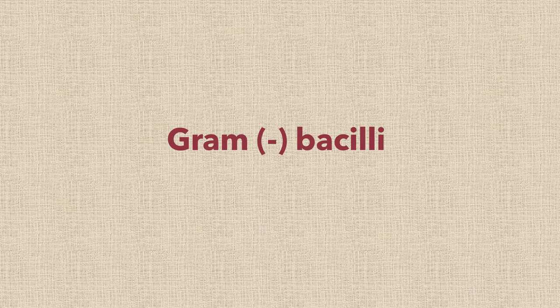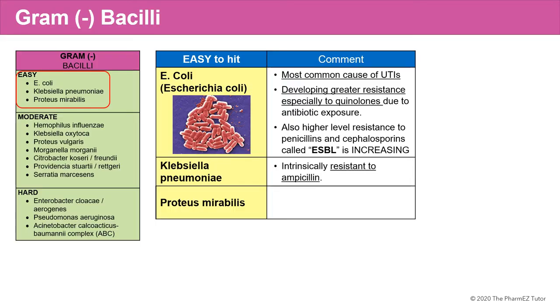First, we'll talk about some of the characteristics of the gram-negative bacilli, and then we'll talk about the antibiotics that are used to treat them. The first subgroup of gram-negative bacilli are the easy-to-hit gram-negatives. This includes three species: E. coli, Klebsiella pneumoniae, and Proteus mirabilis.